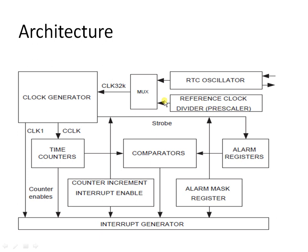The output of this pre-scale block would be 32.768 kilohertz. We need to use only 32.768 because it is the frequency which gives you the real time clock. Out of the two clock sources, any one is selected with the help of a MUX, and that is given to the clock generator. We have a set of time counter registers which are always compared with another set of registers — the alarm registers — and an interrupt is generated based on identical values. We can also generate interrupts via alarm register or counter increment interrupt.